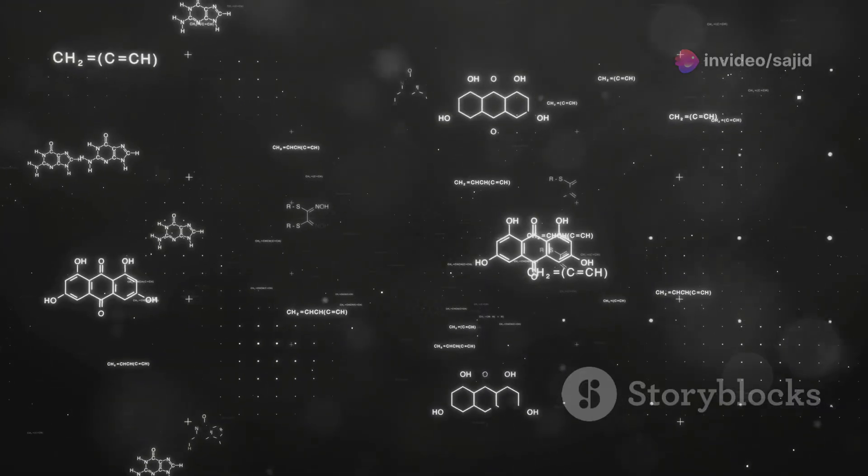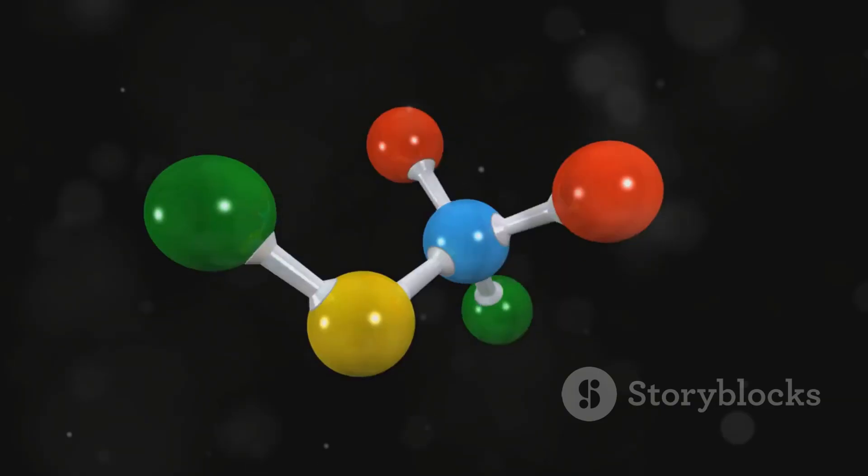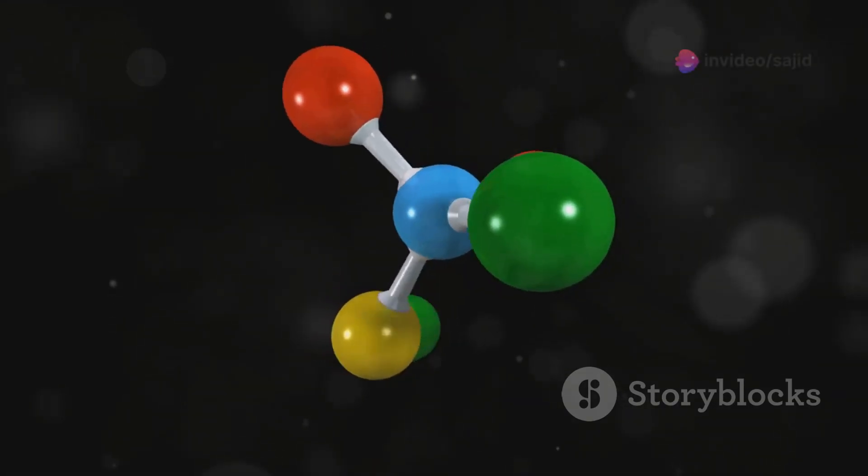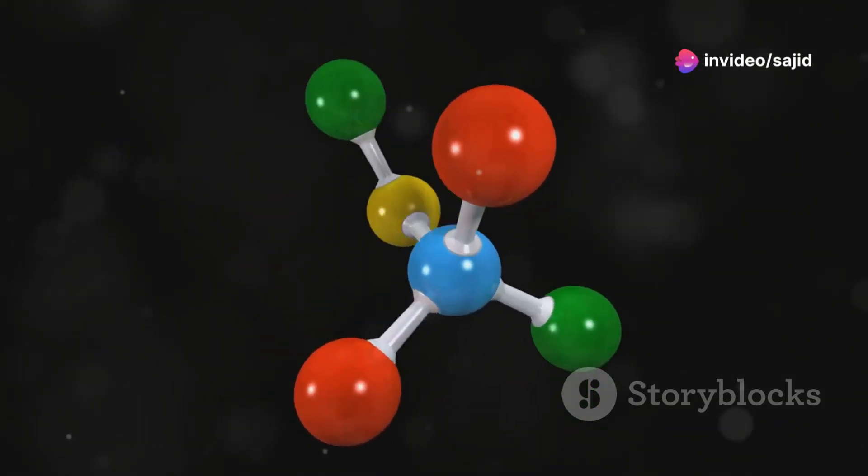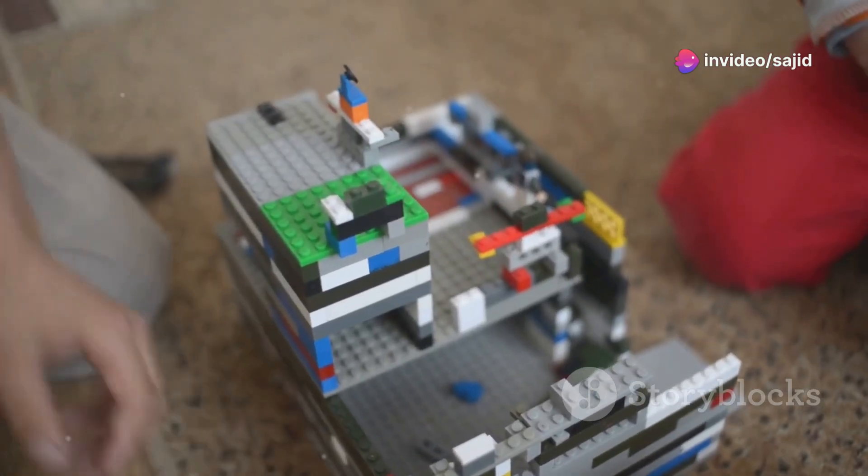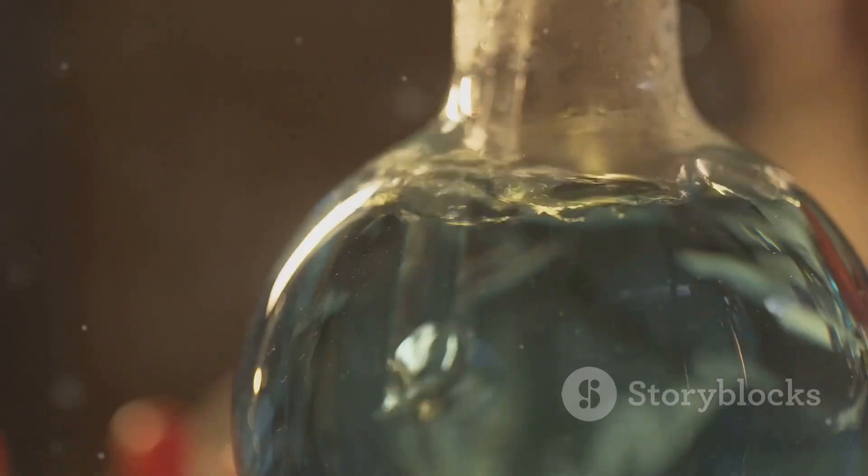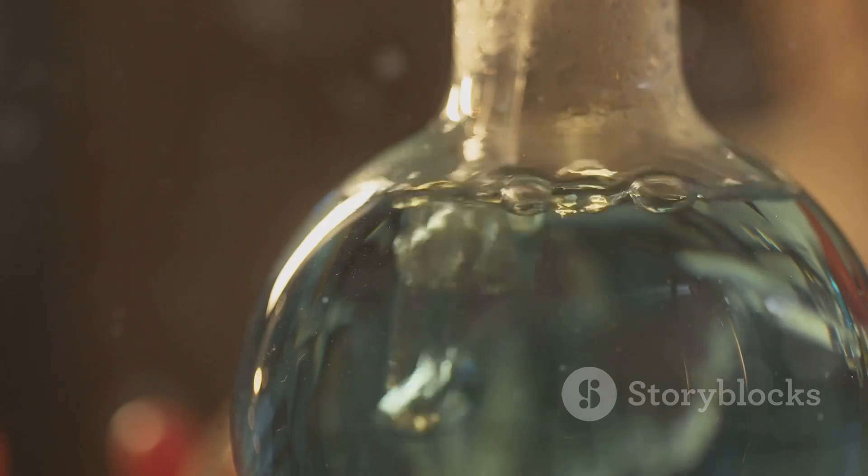Now what happens when you break down a molecule further? You get atoms, which are the basic building blocks. But here's the kicker. When you break those chemical bonds holding the atoms together, you change the substance entirely. It's like taking apart a Lego castle. You're left with the individual bricks, not a smaller castle. The properties and composition change drastically.